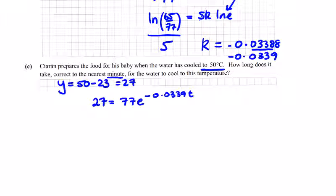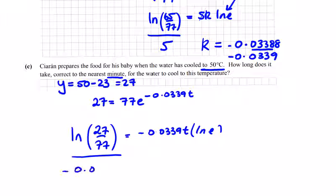So it's the same as the question above. Just divide by 77. 27 over 77. We're going to get the natural log of that, which would bring the minus 0.0339 T down. And the natural log of E obviously is equal to 1 again. So we're just going to divide by the minus 0.0339. And if you're really needing to do an exam, you can do it in one step or combined steps. T is equal to 30.91. And we're asked for it to the nearest minute. So that will be 31 minutes.